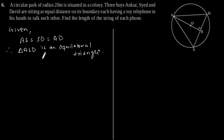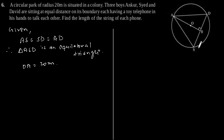As given in the question, the radius of the circular park, that is OA, is equal to 20 meters. Now, the median of an equilateral triangle passes through the circumcenter, that is point O of the equilateral triangle ASD. We also know that medians intersect each other in the ratio 2:1, as AB is the median of equilateral triangle ASD.